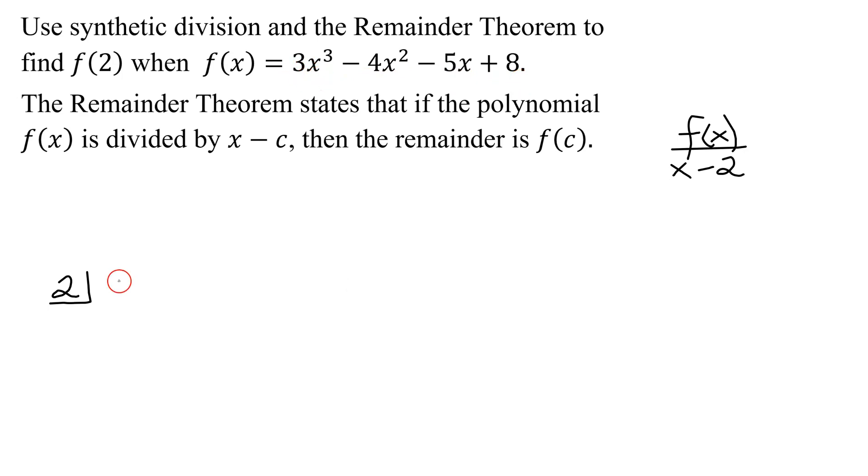So I'm going to have 3, -4, -5, and 8. Leave a little room. Draw your bar. Bring down the first number, the 3, as is.